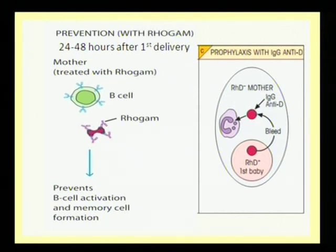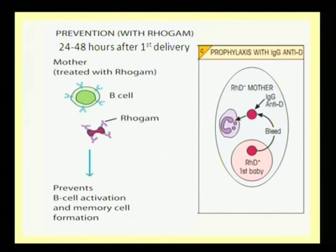A scientist named Coombs developed a Rogam vaccine, which is given to the mother within 24 to 48 hours after the first delivery. Rogam consists of anti-RhD antibodies. If introduced timely with the Coombs reagent in an appropriate quantity, it blocks the formation of B cells receiving RhD antigen, preventing sensitization.